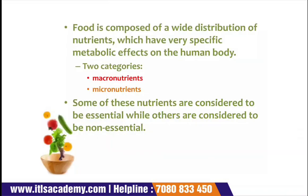As we all know, food is composed of different types of nutrients. When I am talking about nutrients, nutrients means different types of carbohydrates, proteins, fats, vitamins, minerals, dietary fibers, and water. These nutrients have a very essential role in our diet. Food is composed of a wide distribution of nutrients which have very specific metabolic effects on the human body.